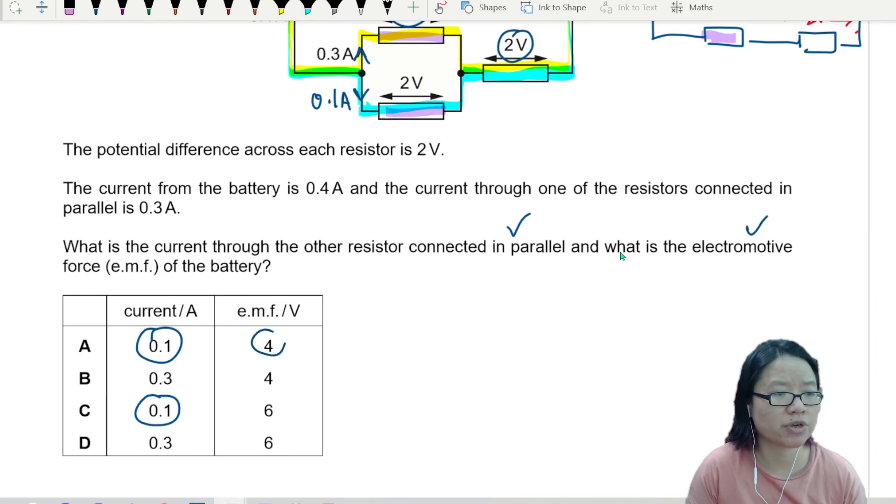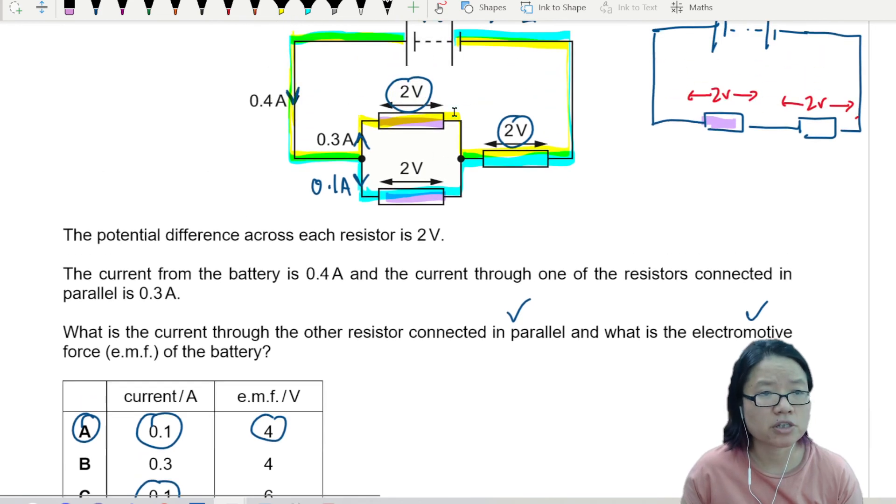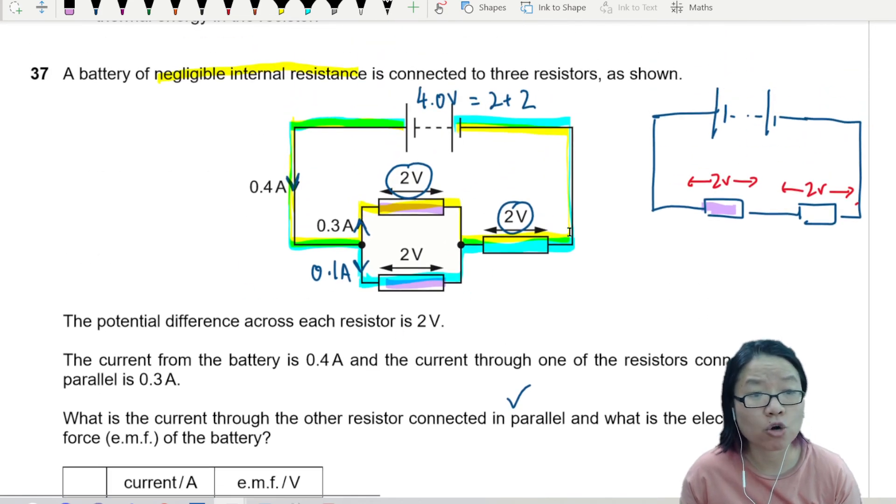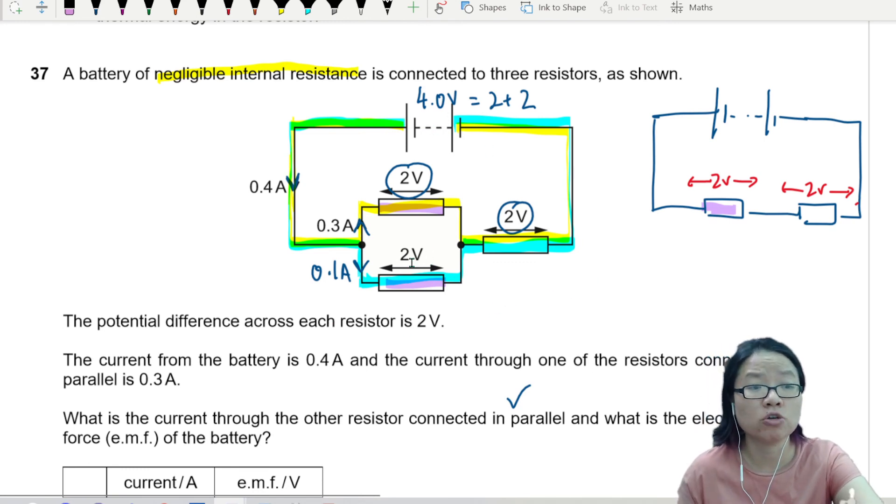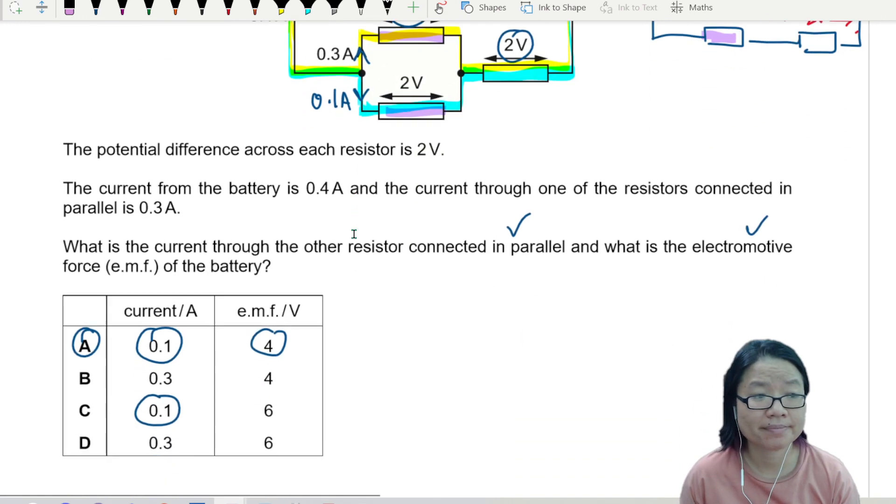What is the EMF of the battery? 4 volts. So the answer is 8, not 6, because it's 2 plus 2. We look at closed loop. Even if you look at the blue colored closed loop, it is still 2 plus 2 equals 4, not 6. And combine them all. So be careful about whenever you have resistors in parallel.